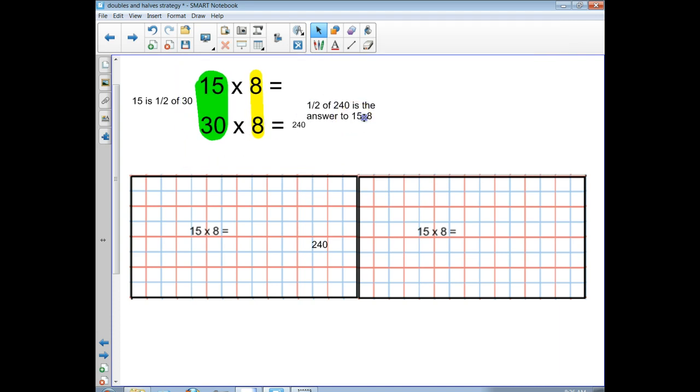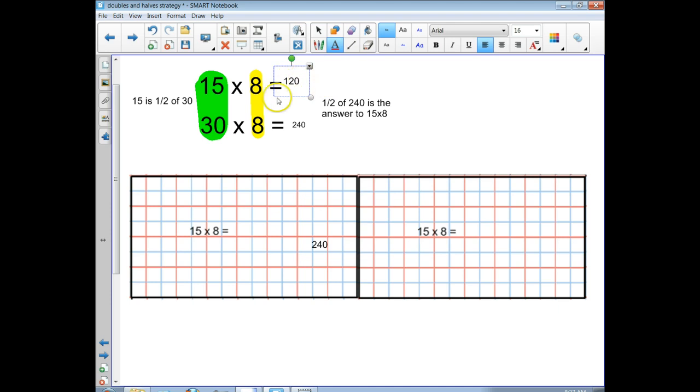So what's half of 240? Well, I'm going to look at the 24, and I'm going to figure out half of 24, and that's easy. Half of 24 equals 12. So I'm going to put my 12, and then I need to add a 0 because I'm working in the hundreds rather than the ones place. So my answer to 15 times 8 equals 120.